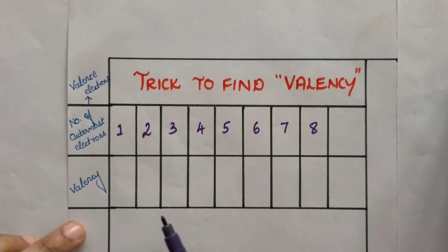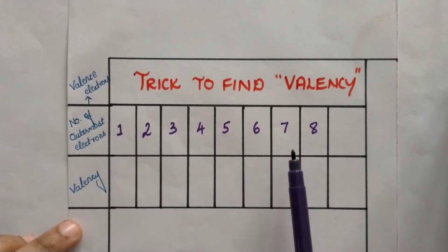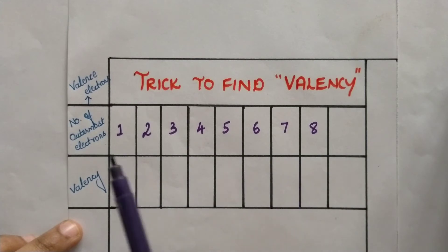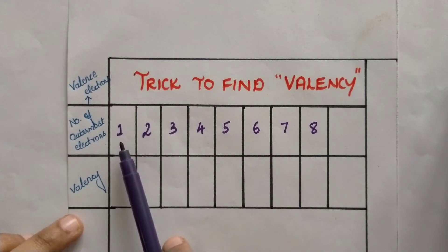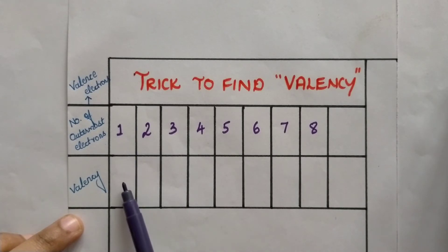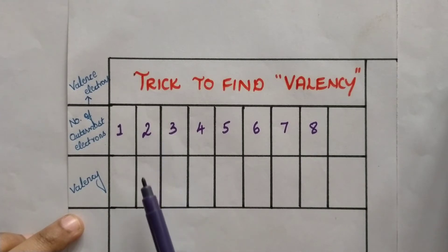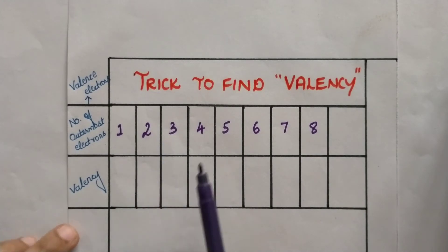Now we are going to identify what the valency of these elements could be. That is, if an element has the number of outermost electrons or valence electrons as 1, then what could be the valency? If the number of outermost electrons is 2, then what could be the valency? That is what we are going to see now.